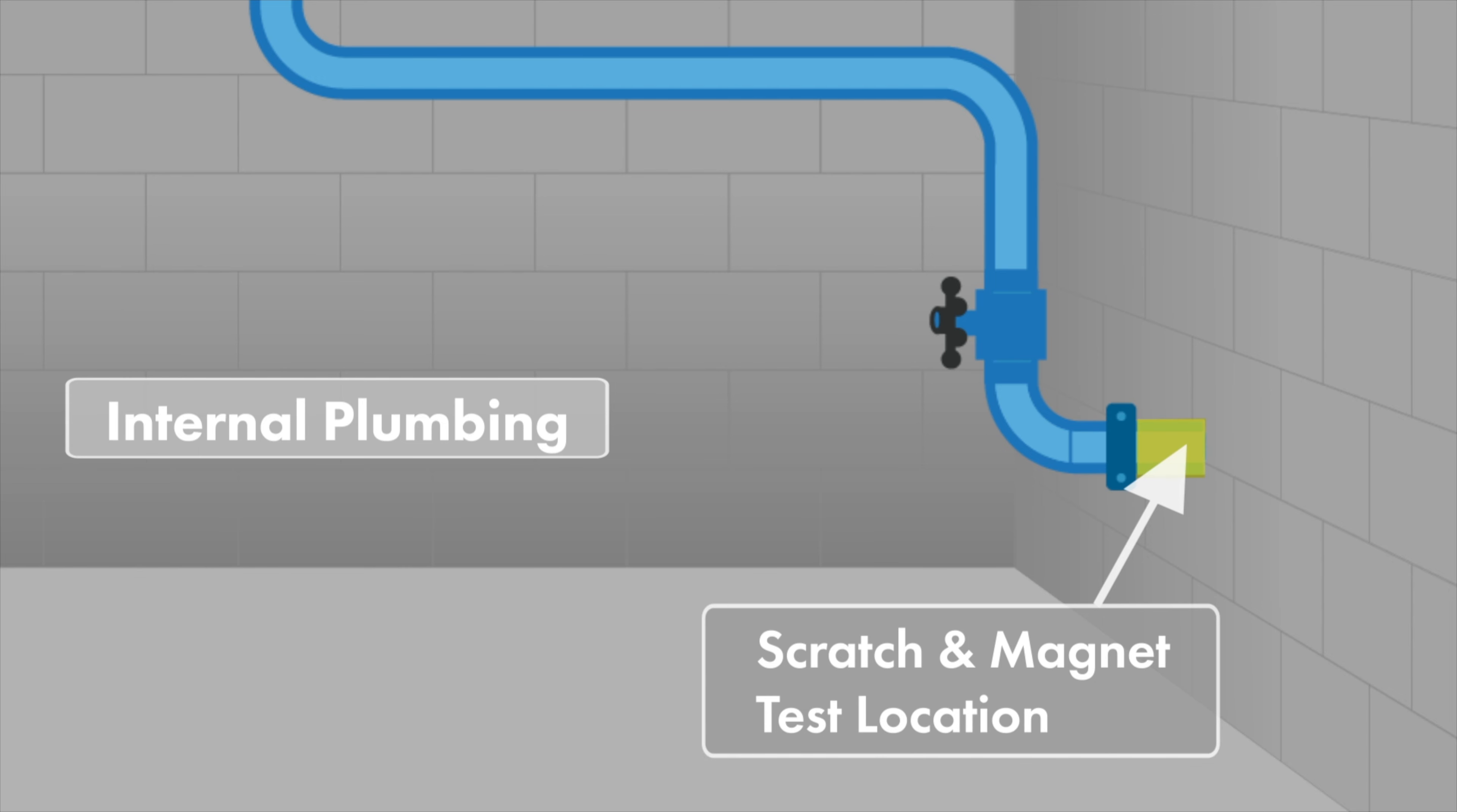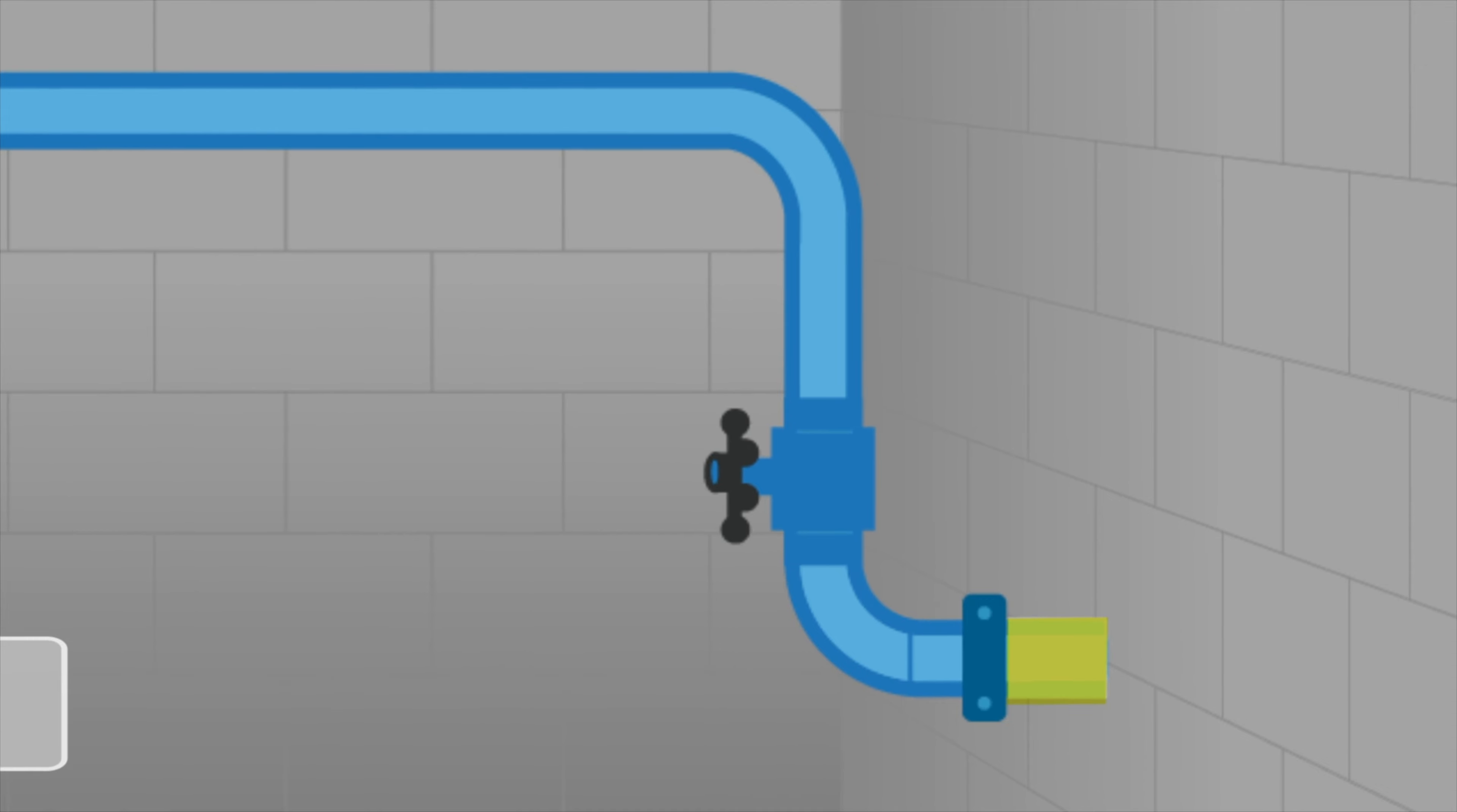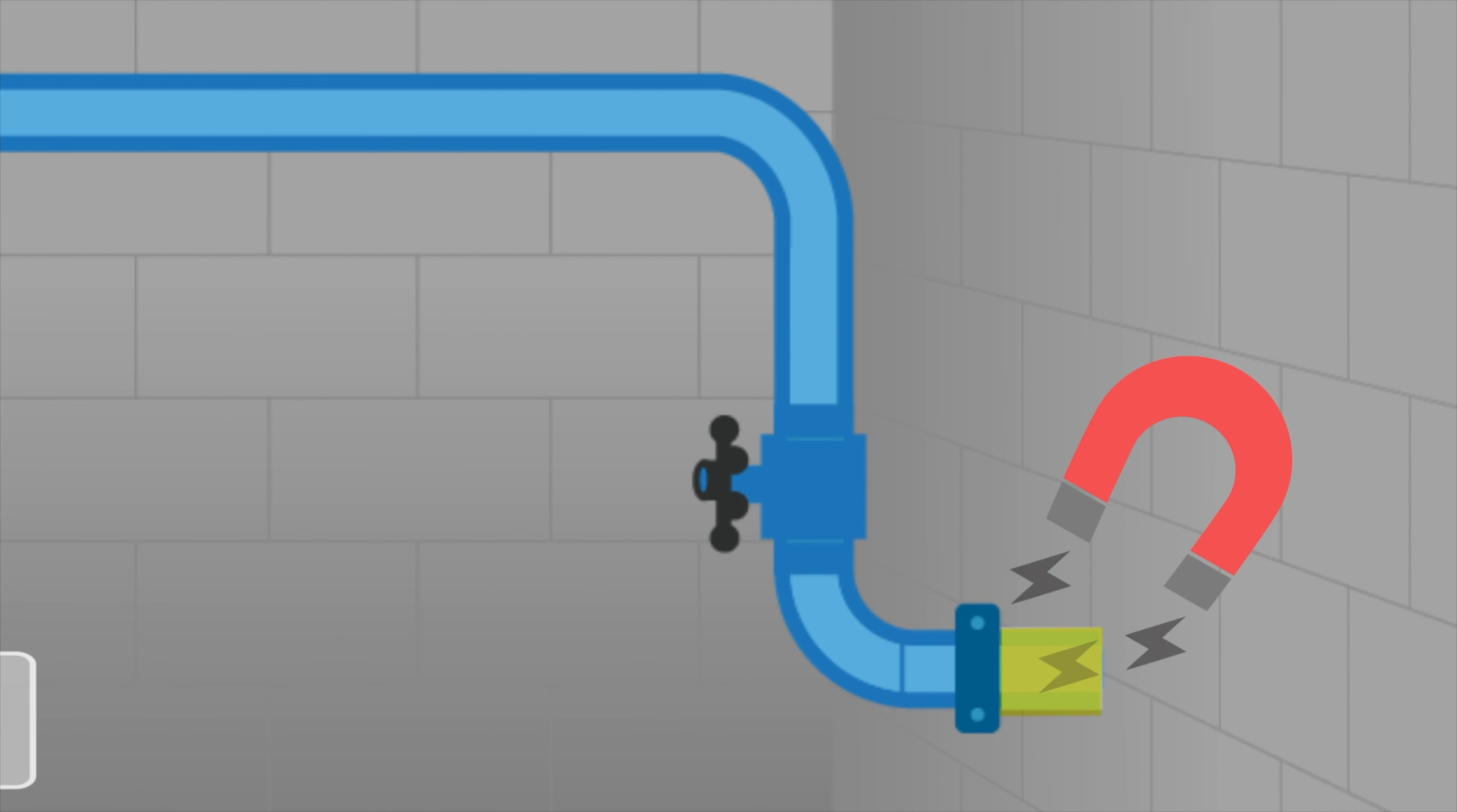The arrow points to the test location. Take photos of the pipe at this location with the scratch mark visible and the magnet if it sticks, and then upload them to the self-reporting survey.